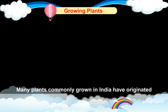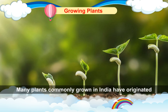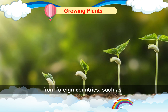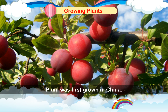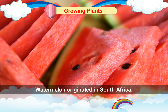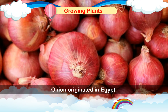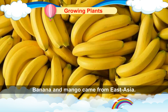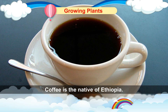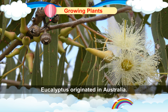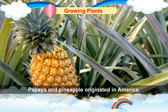Many plants commonly grown in India have originated from foreign countries. Plum was first grown in China. Watermelon originated in South Africa. Onion originated in Egypt. Banana and mango came from East Asia. Coffee is native to Ethiopia. Eucalyptus originated in Australia. Papaya and pineapple originated in America.